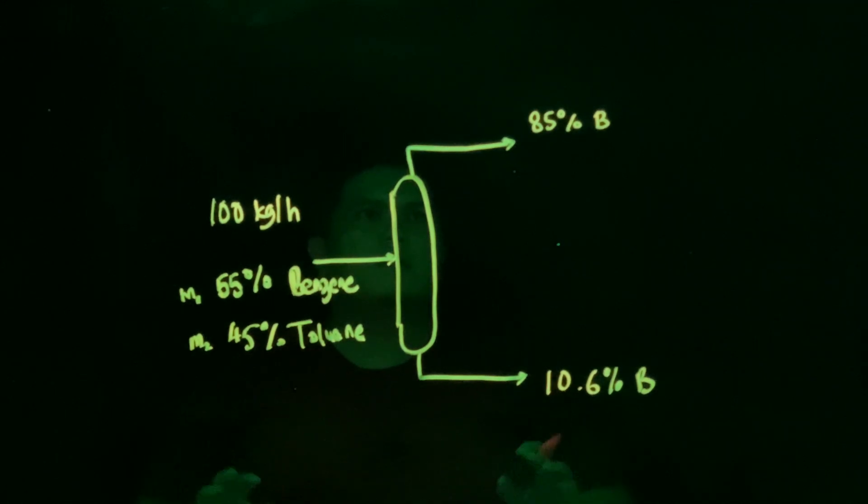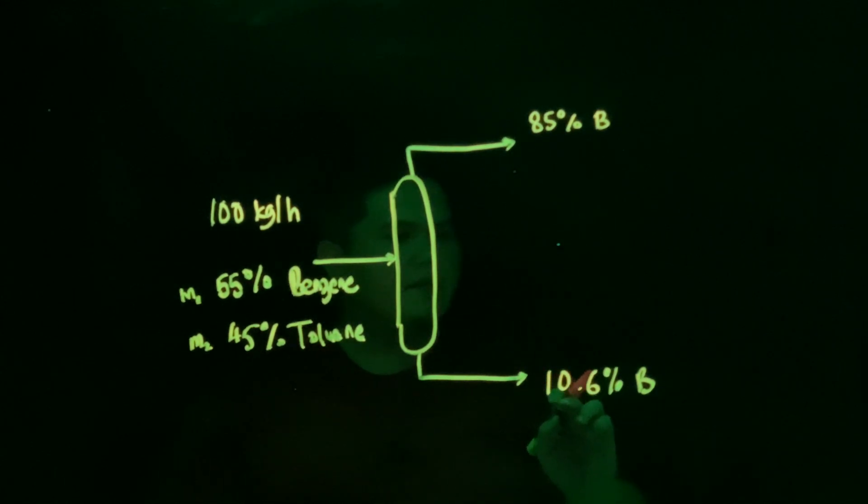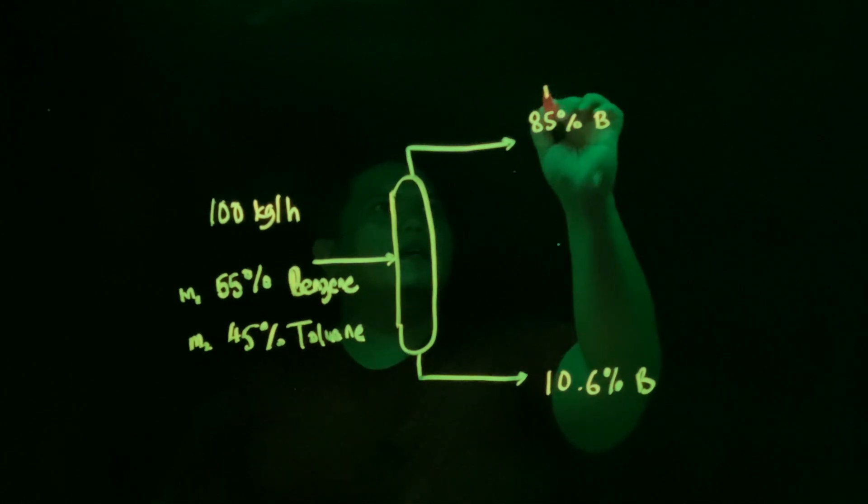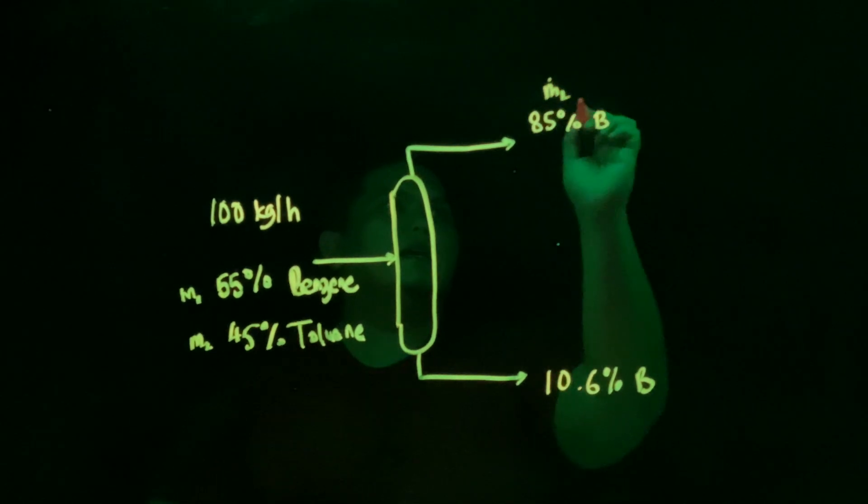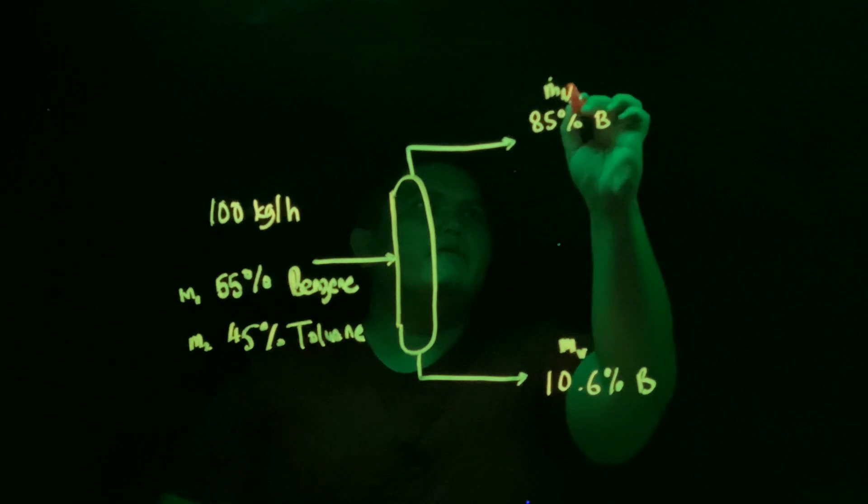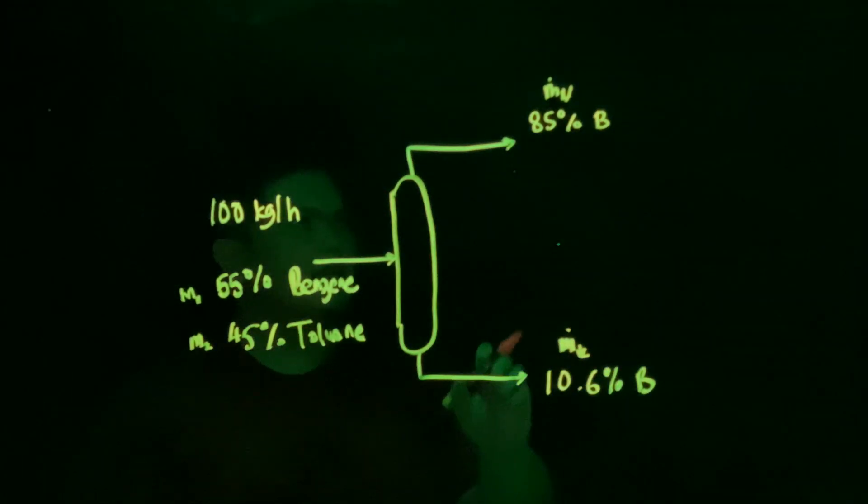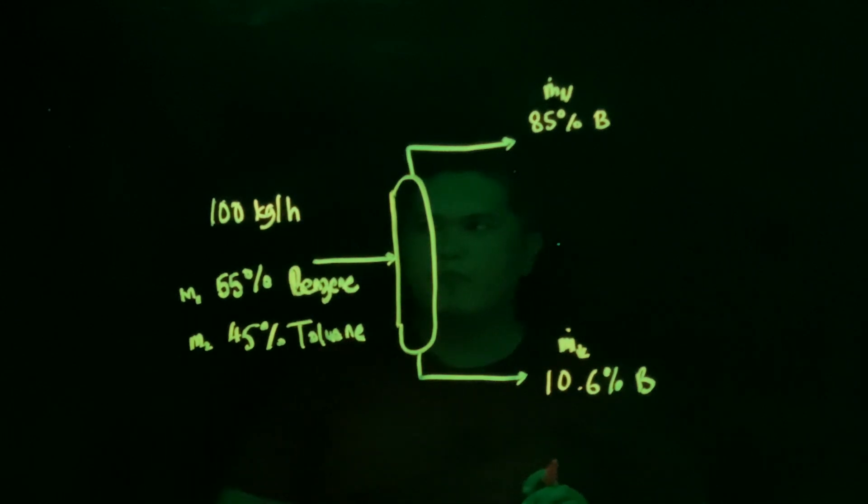So how do we solve this particular problem? How do we determine the mass flow rate of the overhead and the bottom one? So the overhead here, we need to know what is the mass flow rate here, as well as we need to know what is the... sorry, this supposed to be MV, this supposed to be ML, which is the liquid. This is gonna be the vapor.